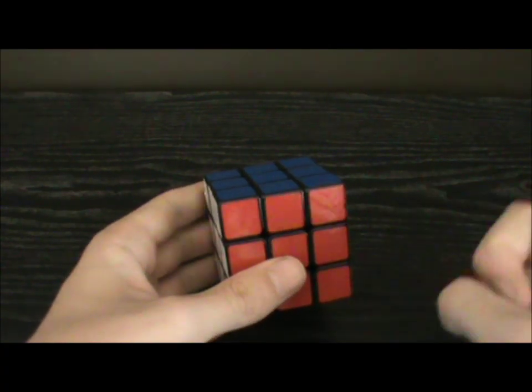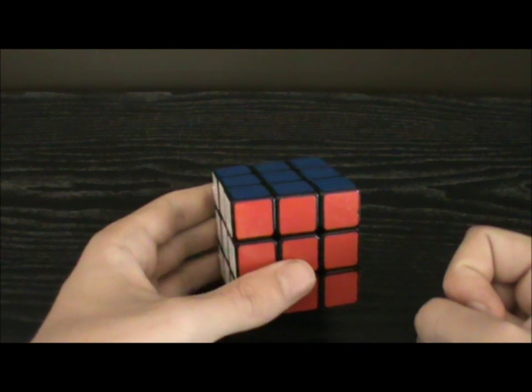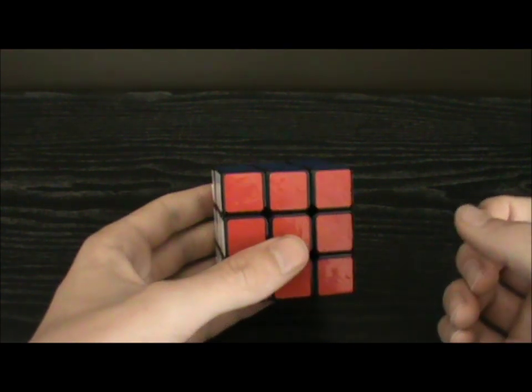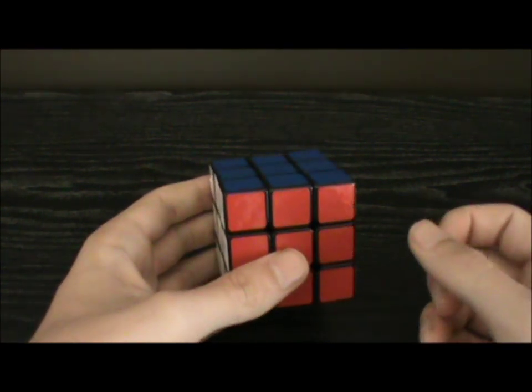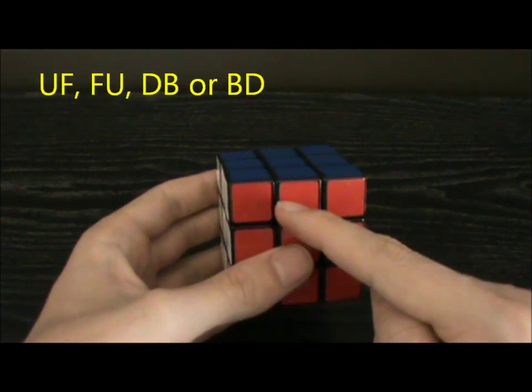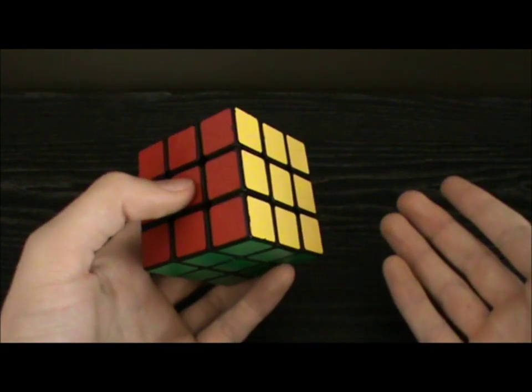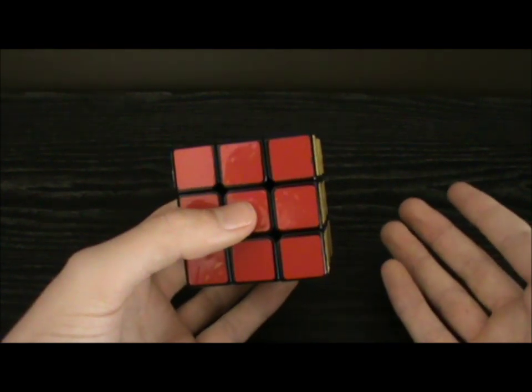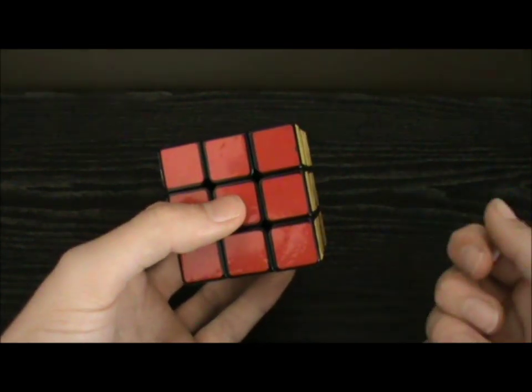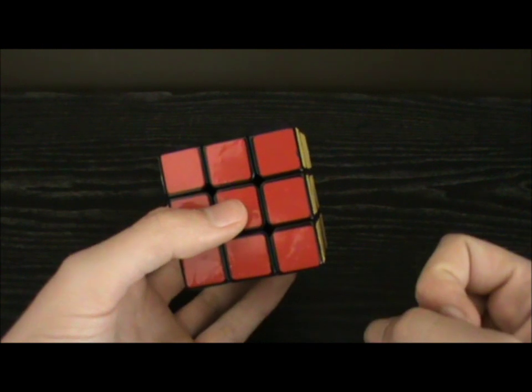Solving pieces outside the M slice is pretty straightforward. The most difficult part about the M2 method is shooting to UF, FU, DB, or BD. In order to be able to shoot to these four targets, you have to know four very simple algorithms. Two if you don't include inverses.